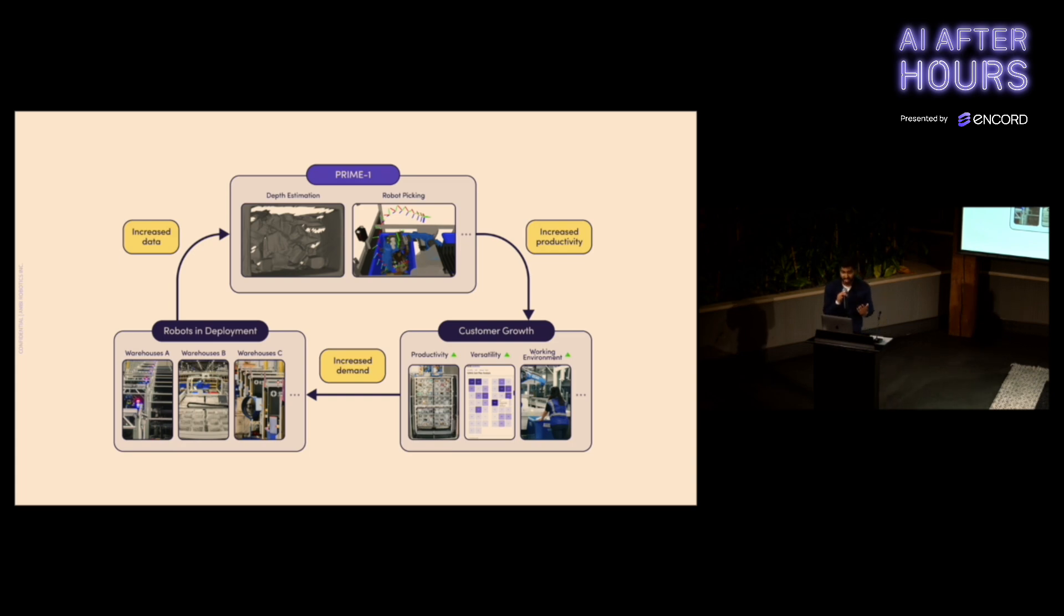Finally, this ties into Ambi's data flywheel approach, where more data results in better models, which results in increased productivity for our customers, which results in customer growth and increased demand for our products, which results in larger deployments of our fleet, and that results in more data, and the cycle continues.